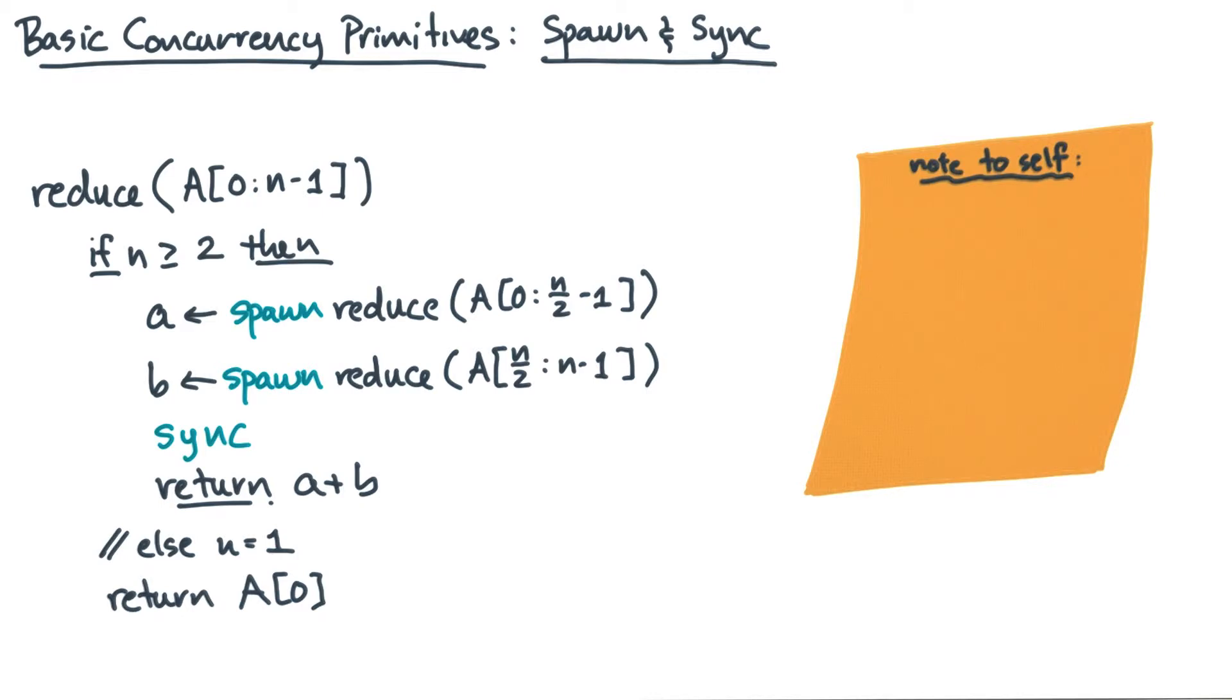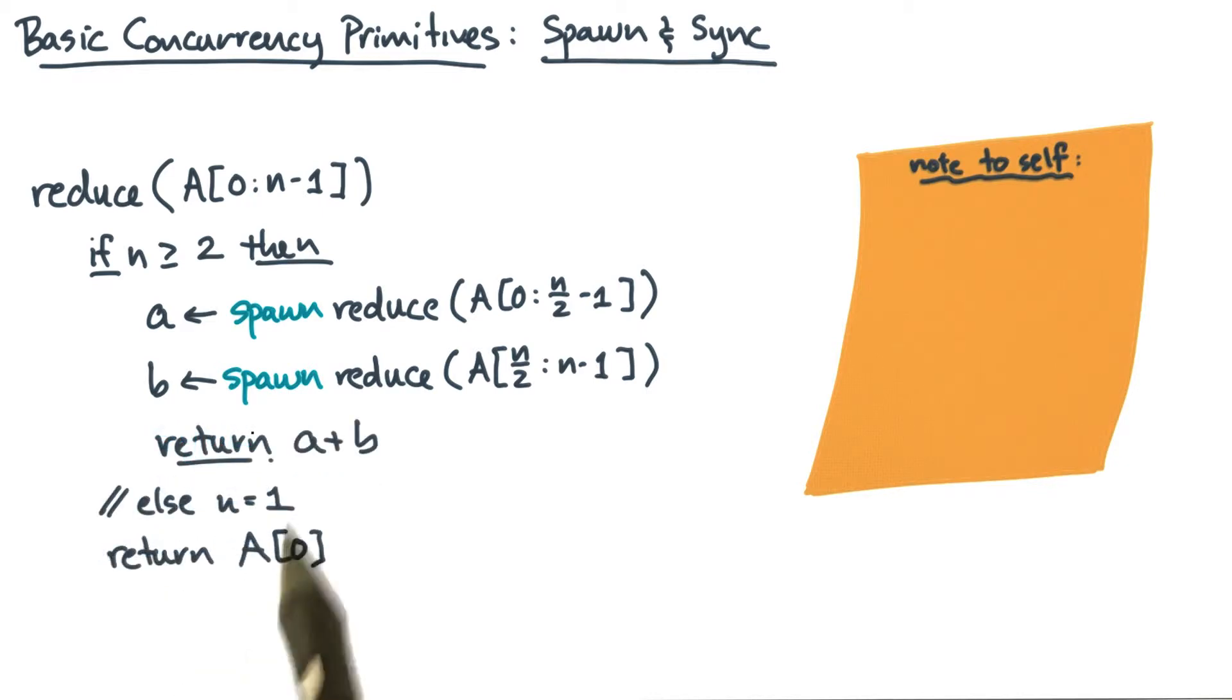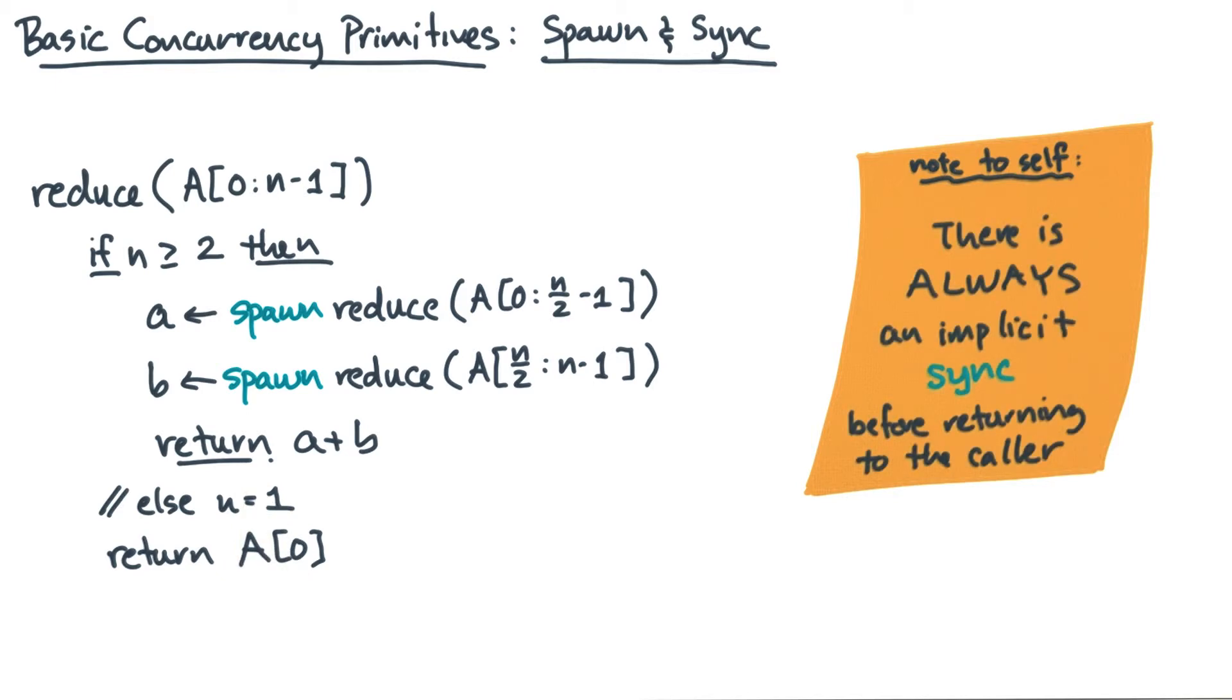Let me make one final remark about spawn and sync. Suppose you leave the sync out. Even if you leave sync out, there will always be an implicit sync at the return immediately before going back to the caller. Let me show you what that means by transforming this code to match the note.